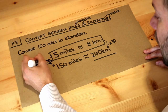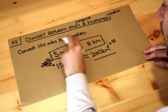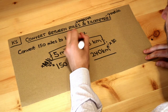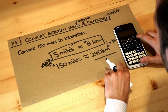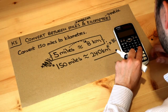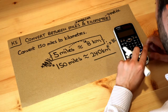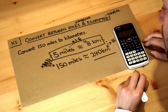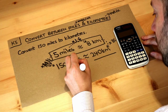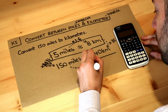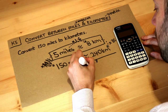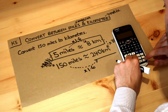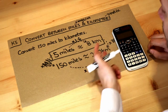Another way we could have done it is to say: to get from miles to kilometres, we're going from 5 to 8. How many times bigger is that? Well if we do 8 divided by 5, it's 1.6. So to get from miles to kilometres, you multiply by 1.6. Which means to get from 150 miles to kilometres, we times 150 by 1.6, and 150 times 1.6 is again 240.